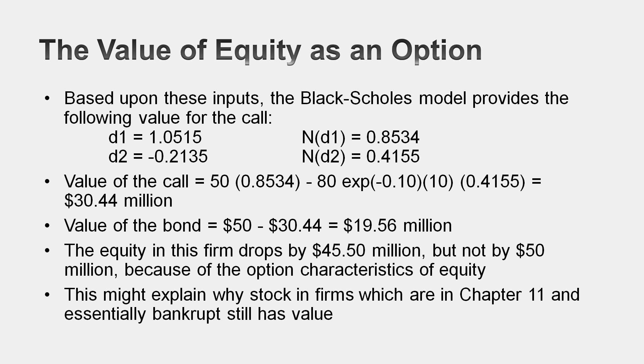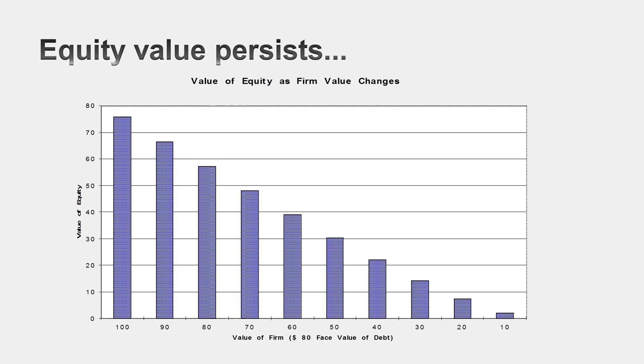I took this company and kept dropping the value of the business from $50 million to $40 million to $30 million to $20 million to $10 million, while keeping the debt as is — an $80 million, 10-year zero-coupon bond. I was trying to find out: when does equity in a publicly traded company become worthless? The answer is almost never. I kept lowering the value to $2 million, a half a million, while keeping the debt intact, and the equity hung in there. Equity is an incredibly stubborn instrument. What's keeping the value intact is a combination of two things: time and hope. You have 10 years to play this game, and the equity will not become worthless.